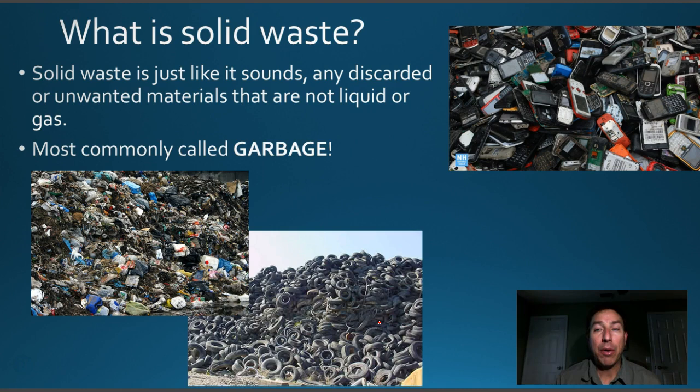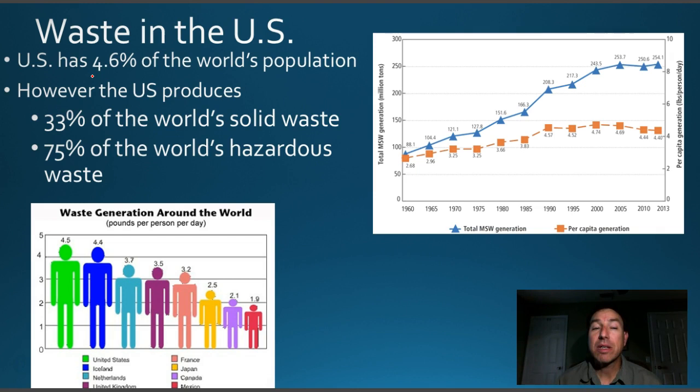Let's look at some waste statistics in the United States. The US is about 4.6% of the world's population, yet we produce about a third of the world's solid waste and about 75% of the world's hazardous waste. This is because of our commercial society — we purchase and create many things and have the money to do so, producing all this stuff that we have to get rid of or figure out how to lessen.